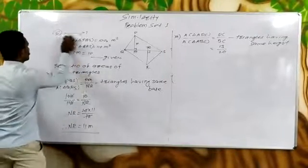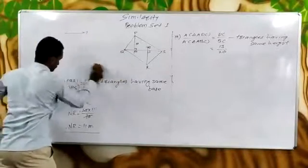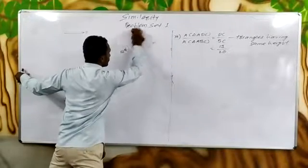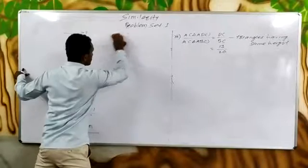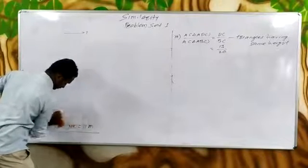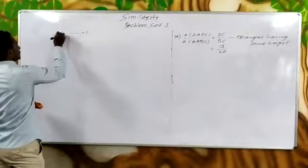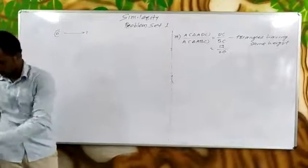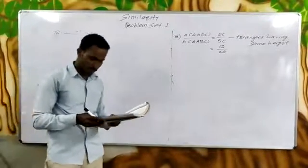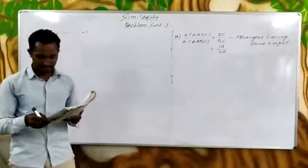Now Problem 6. Triangle MNT is similar to triangle QRS. Two triangles are given. The length of the altitude drawn from point T is 5, and the length of the altitude drawn from point S is 9. Find the ratio of the area of triangle MNT upon the area of triangle QRS.